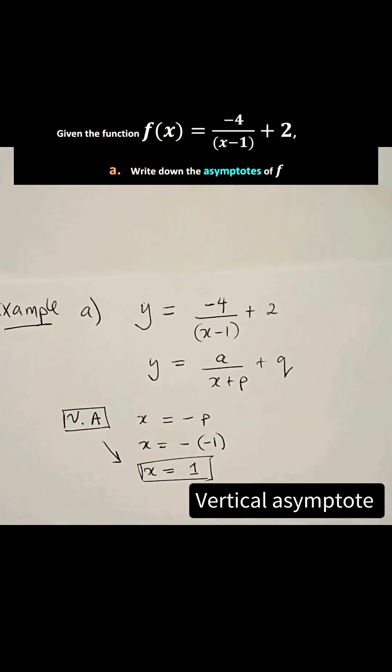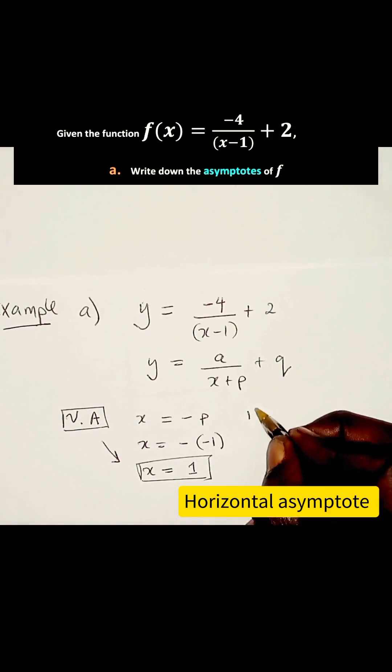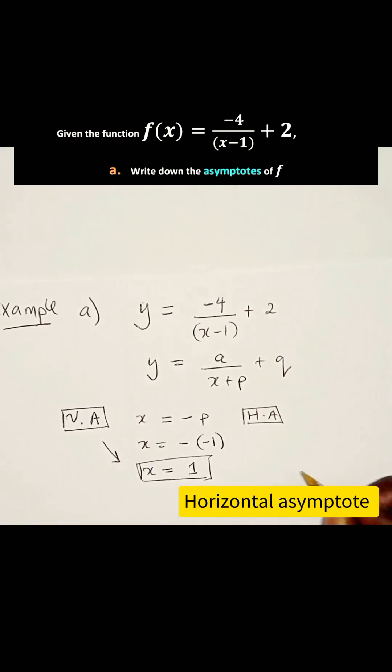Now, let's consider the horizontal asymptote. I abbreviate that as HA. Now, the horizontal asymptote is given by Y is equal to Q.